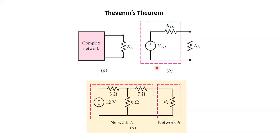Let's look at a simple example. Suppose we have this particular network — not very complex, but sufficient to explain Thevenin's theorem. We wish to measure the current through resistance RL. We have a 12 volt source and three resistances: 3 ohms, 6 ohms, and 7 ohms connected in the circuit. The portion inside the dotted box is what we call the complex network, and we can replace it with a simple Vth and Rth.